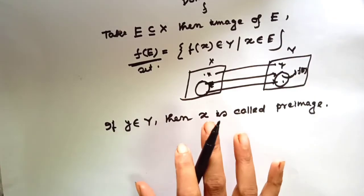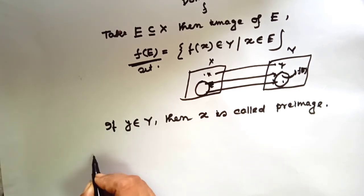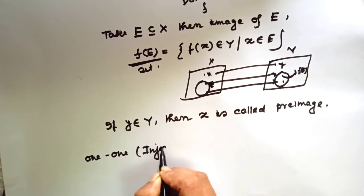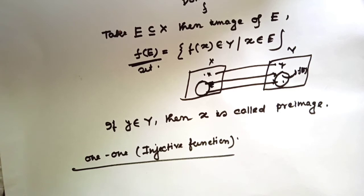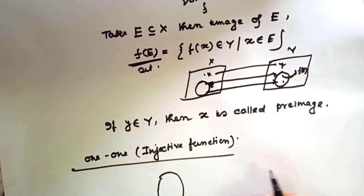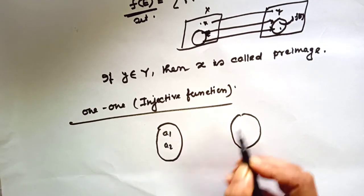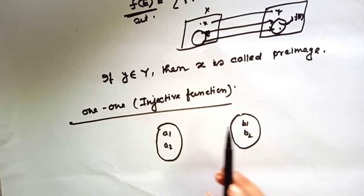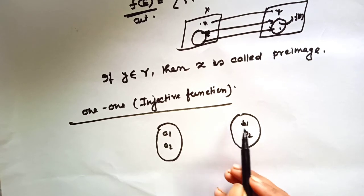From this pre-image idea, we can approach a new definition: the definition of a one-one function, or injective function. Let's see a diagram first. Label elements A1, A2 in the domain and B1, B2 in the range. A one-one function is when each element of the range set has exactly one corresponding element in the domain set.